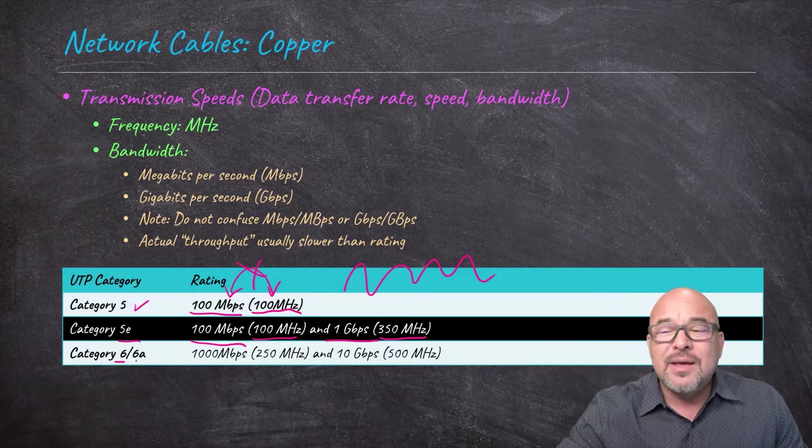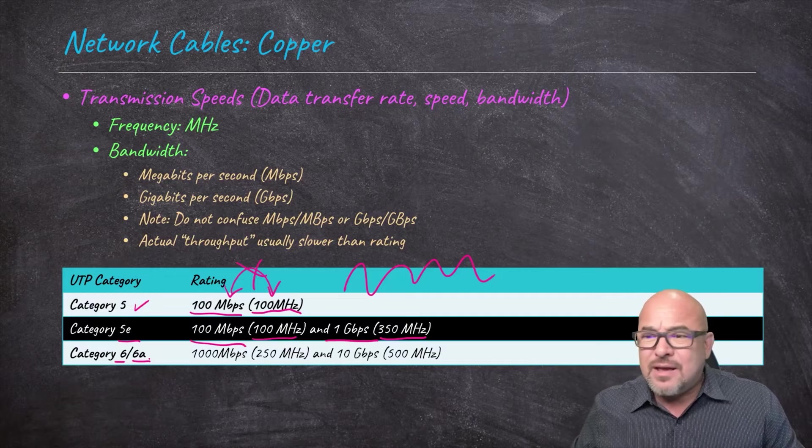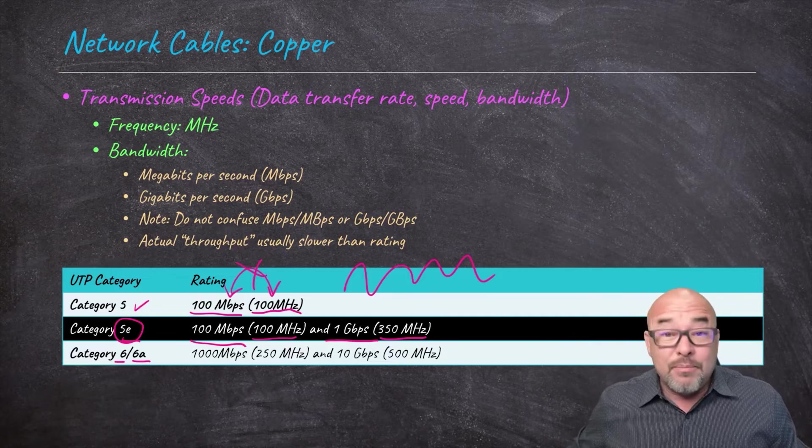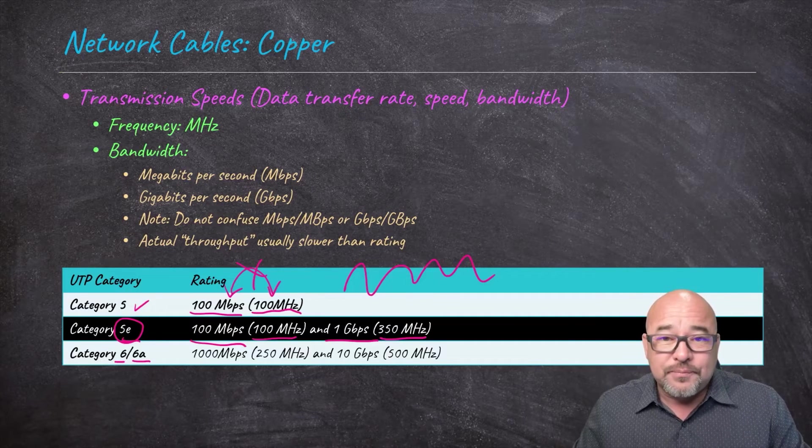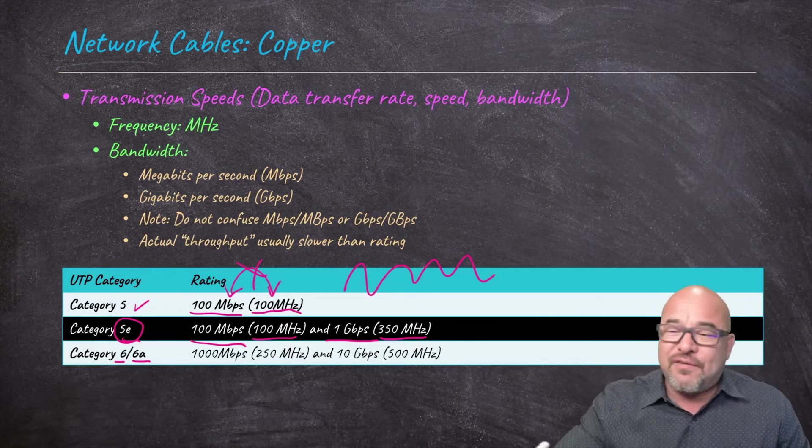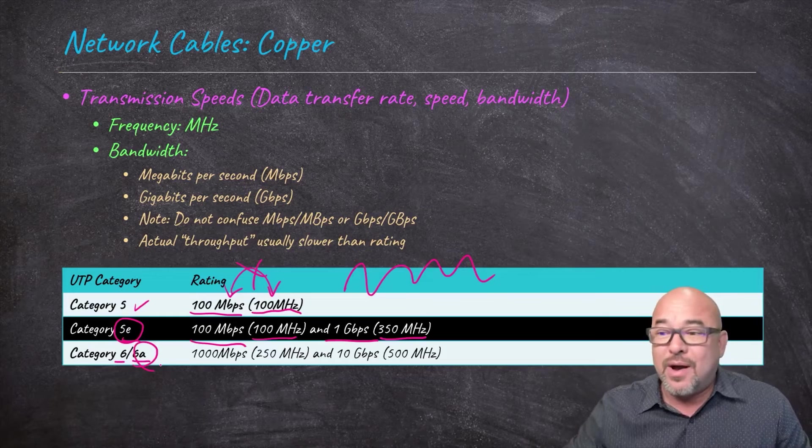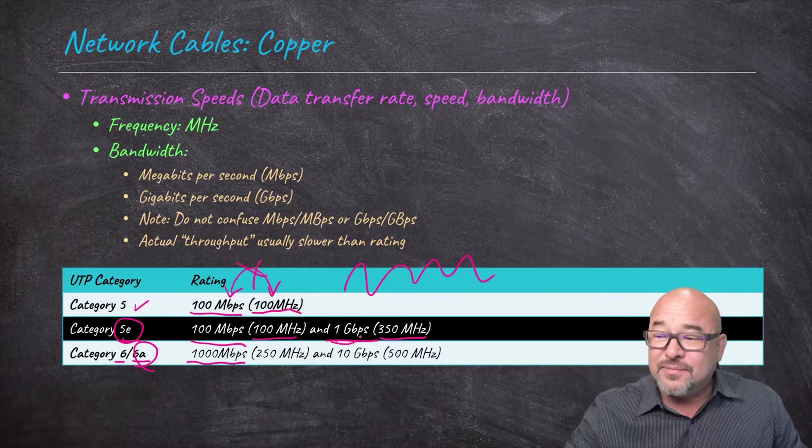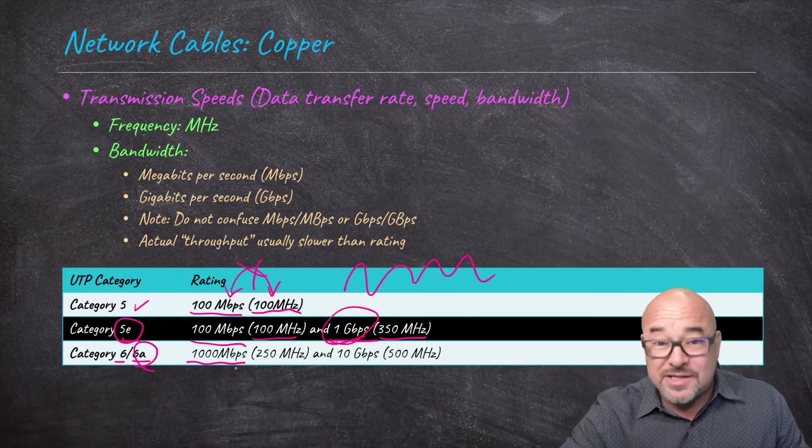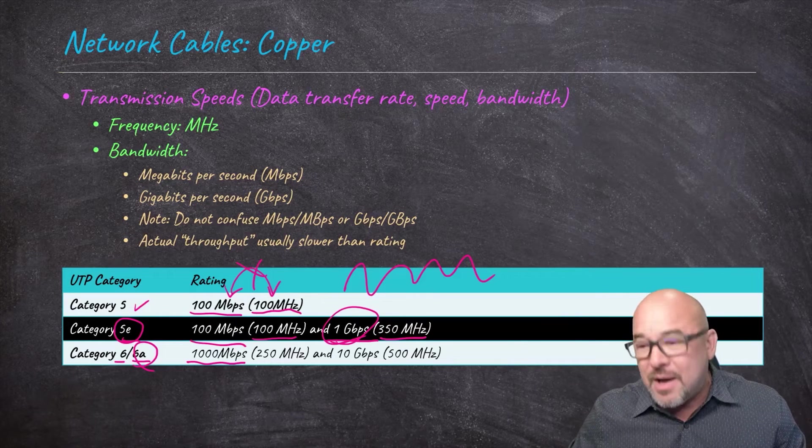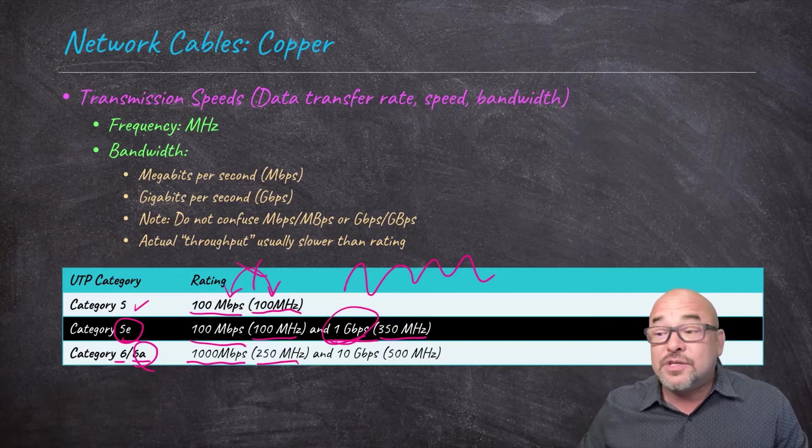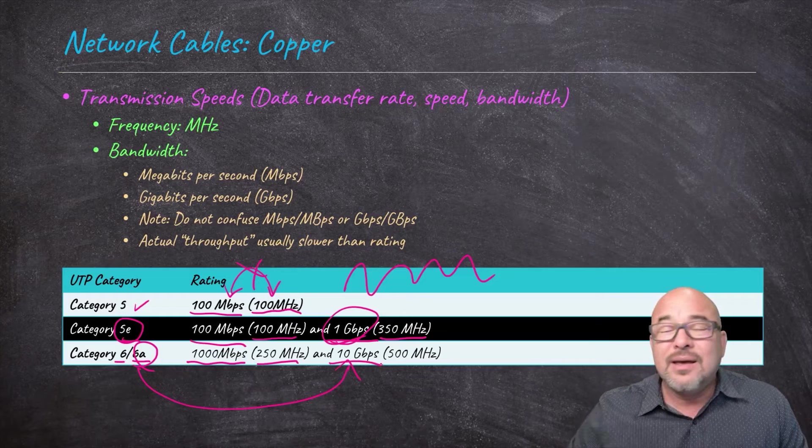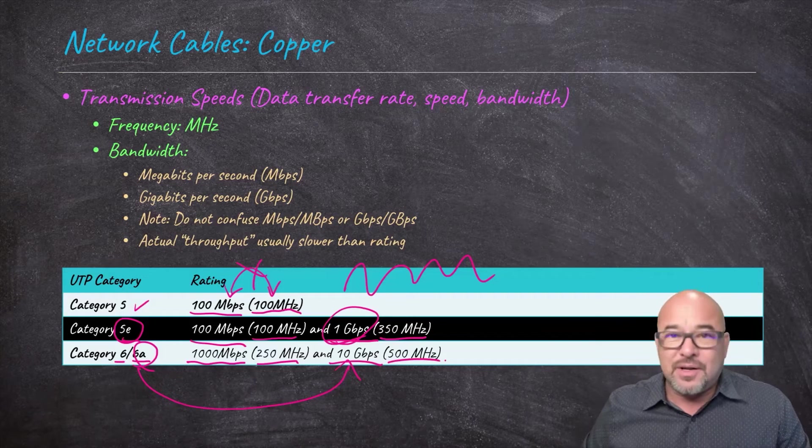But with the proper network cards, network equipment, network switches, and so forth, and environmental conditions, you can get up to one gigabit per second. So that's pretty fast on Cat5E and it uses 350 megahertz in order to achieve that speed, in addition to other factors. Then we had Cat6 and then Cat6A. Hey, what happened to Cat6E? We have a Cat5E, why not Cat6E? It just never got standardized. Some manufacturers were creating cables that they called Cat6E, but it never really got ratified.